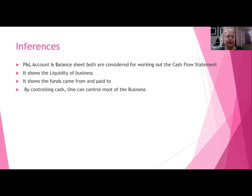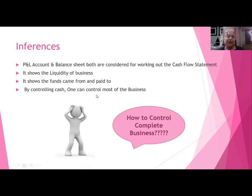By controlling cash, one can control most of the business — not a hundred percent, but most. How to control the complete business? Complete business can be controlled by controlling both your operations and your cash. About 70–80 percent you can control through your cash, but 20 percent you have to exercise through your operations.